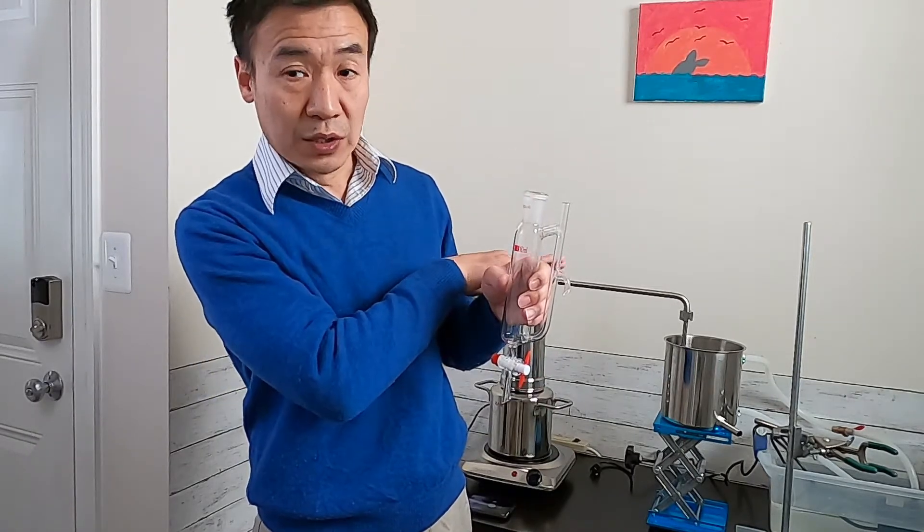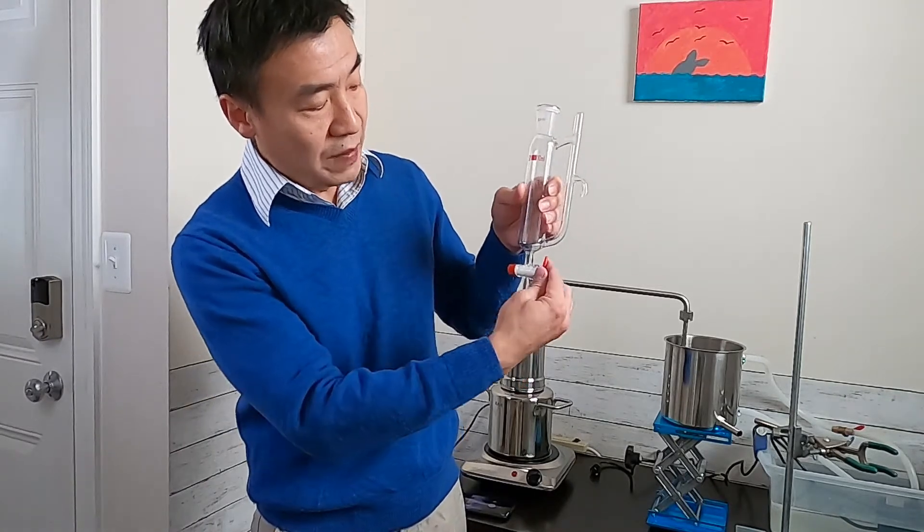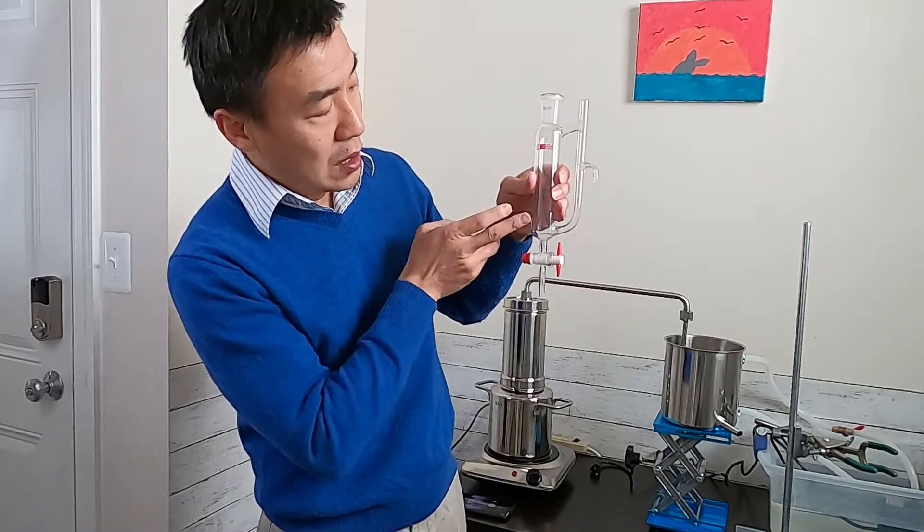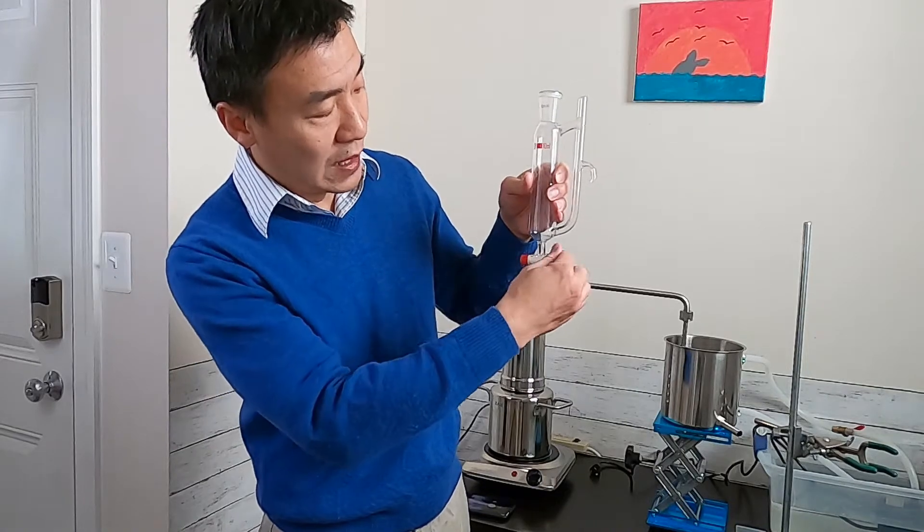You take the tubing out and drain from here. You open it and drain until the oil gets to the valve, then you close it.